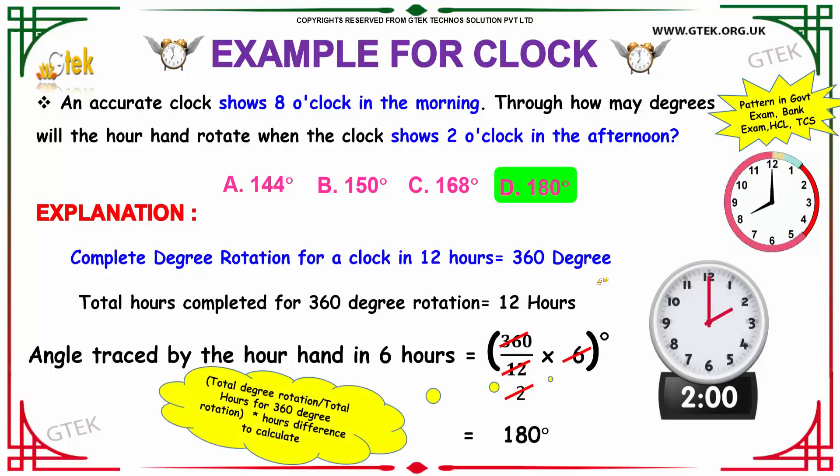The complete rotation of a hand here, our hour hand will be 360 degrees for 12 hours. So if your hour hand rotates 360 degrees for 12 hours, then how much degrees will it rotate for 6 hours? It is very easy.